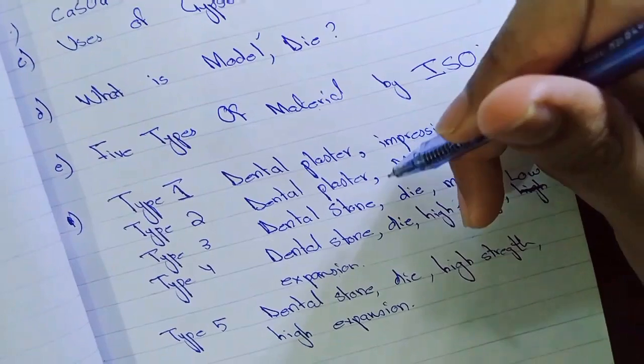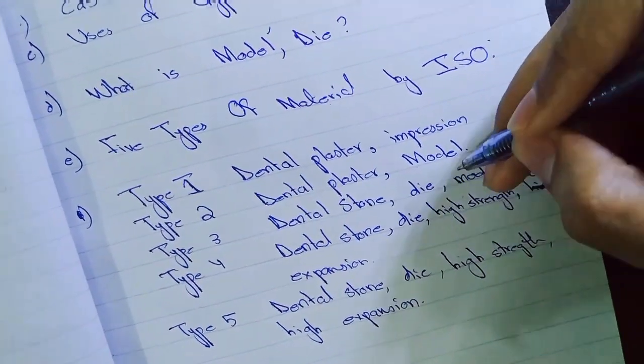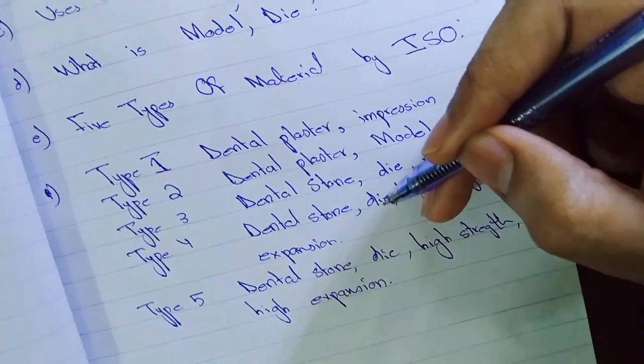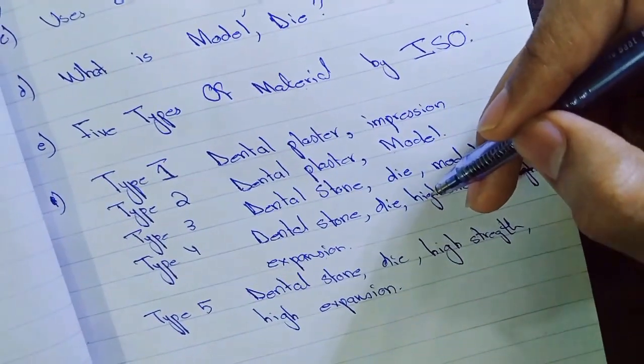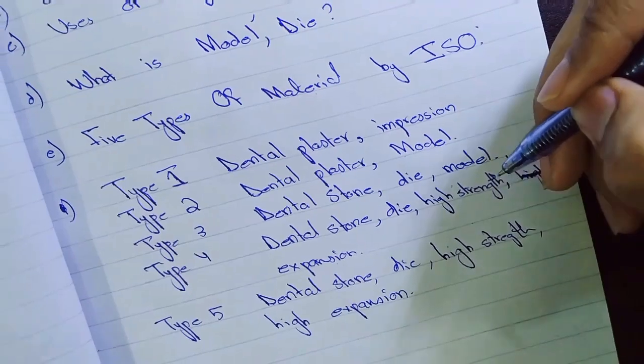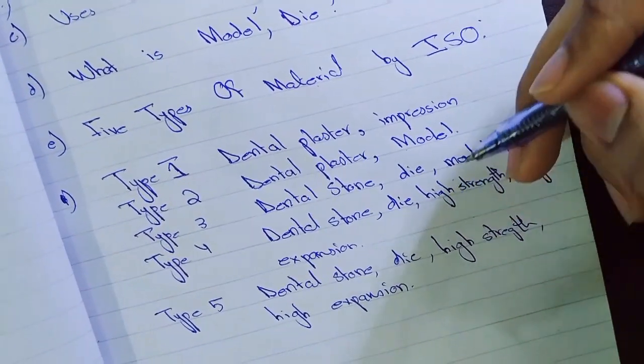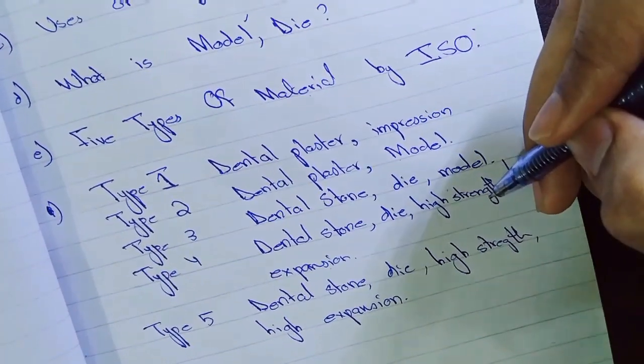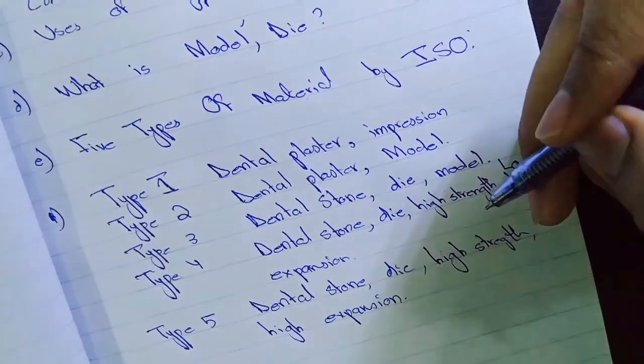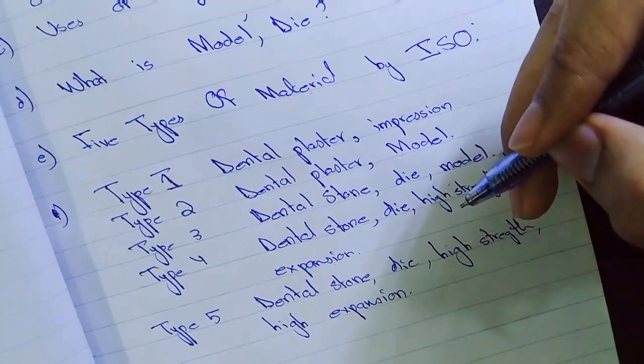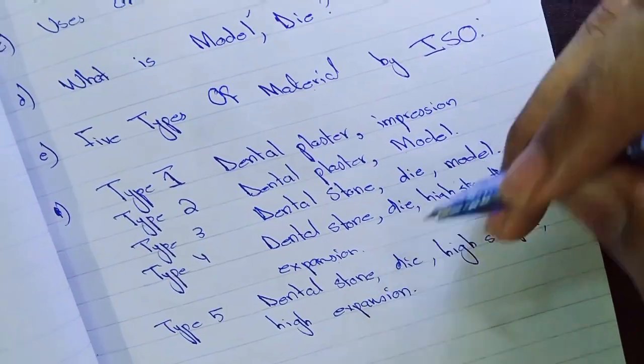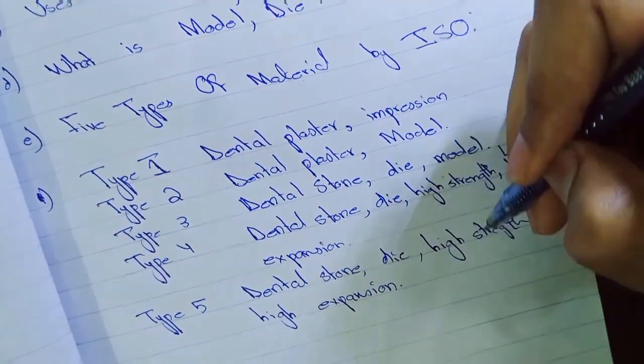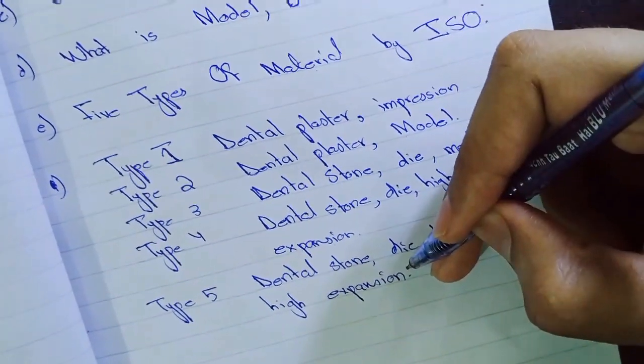Now type 3 is dental stone. It can be used for dye making, for model making. Type 4 is the dental stone, it has high strength and low expansion. These two properties, the high strength and low expansion, give it advantage that it can be used in investment material as well. Now type 5 the dental stone can be used for dye. It has high strength and high expansion.